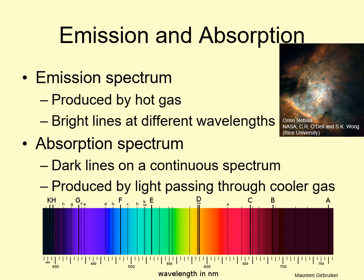An example of this happens when we look at the light from the sun. The sun's surface produces a thermal spectrum, but then the light passes through the sun's atmosphere, and later it passes through the Earth's atmosphere. Both of these produce absorption lines in the sun's spectrum when we observe it from Earth.